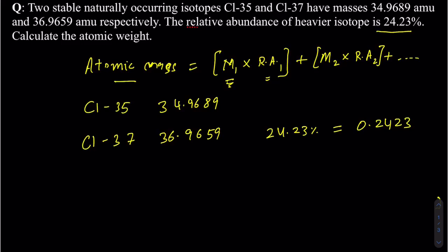I'm not given the relative abundance for chlorine-35, but that's not a problem because we only have two isotopes. If you're given the percentage of one, you can easily figure out the other one. Just subtract from 1: 1 minus 0.2423 equals 0.7577.